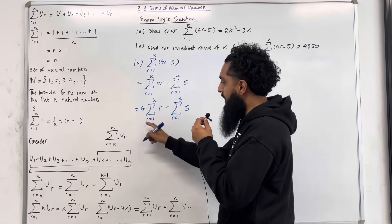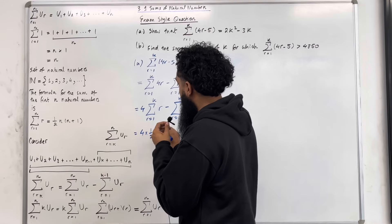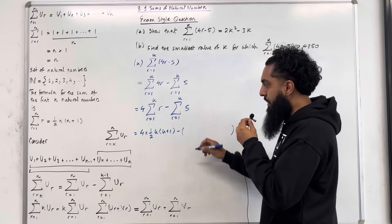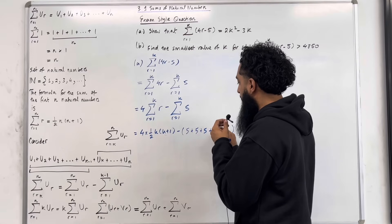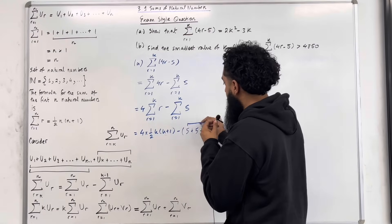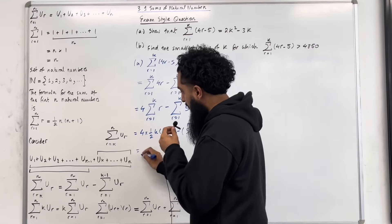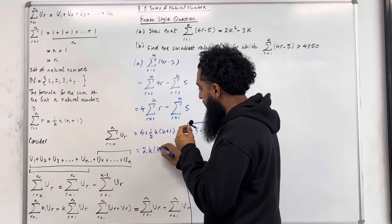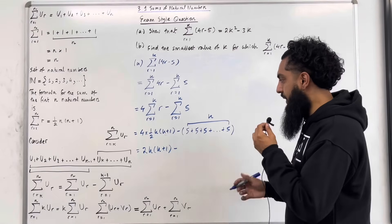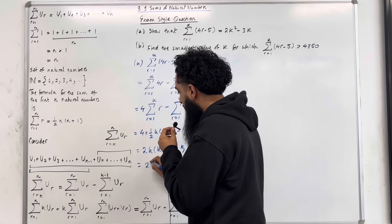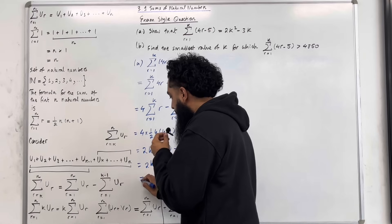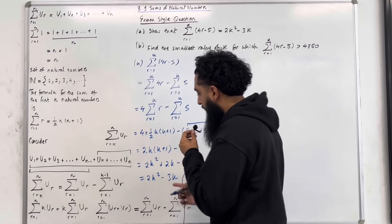The sum of the first N natural numbers is given by a half N multiplied by N plus 1. We replace the N's with K, so this simplifies to 4 lots of a half K multiplied by K plus 1. Take away — opening up the summation, we have 5 plus 5 plus 5 plus dot dot dot plus 5. The upper limit is K, so there are K terms, giving 5K. 4 times a half is just 2, so we have 2K multiplied by K plus 1, minus 5K. Expanding the bracket gives 2K squared plus 2K minus 5K, which simplifies to 2K squared minus 3K, as required.